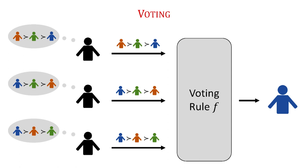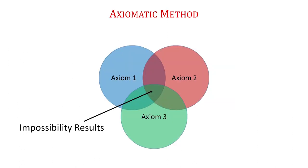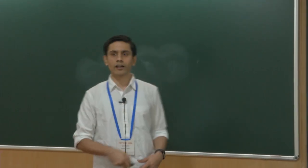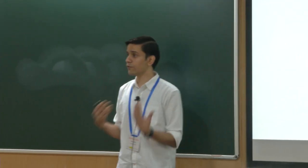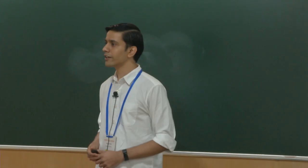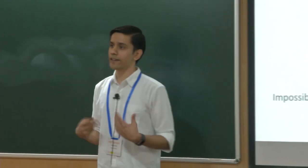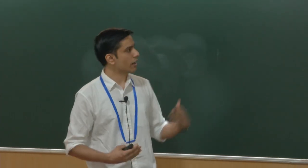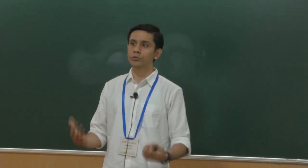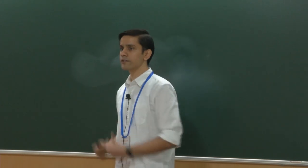Voting theorists tried hard to answer how to compare different voting rules. One method that received a lot of attention is the axiomatic method, where you define natural axioms your voting rules should satisfy and search for rules at the intersection. But many celebrated results in this line of work actually derive impossibility results, showing that for many natural combinations of axioms no voting rule satisfies all of them simultaneously.